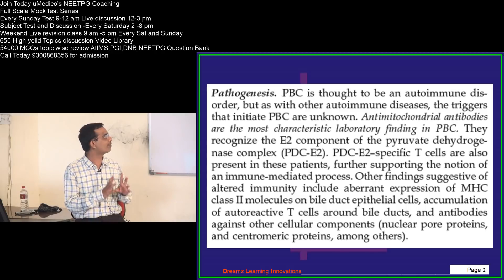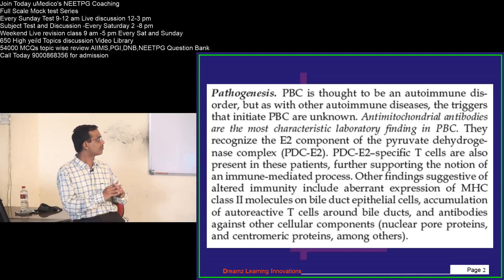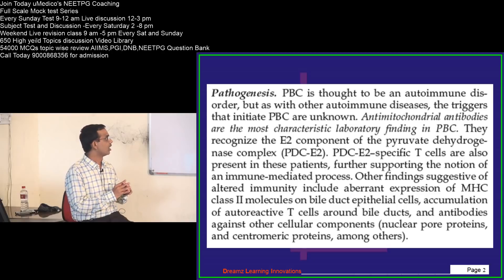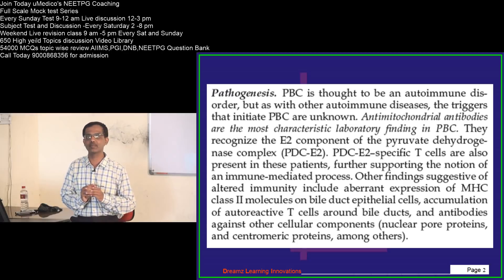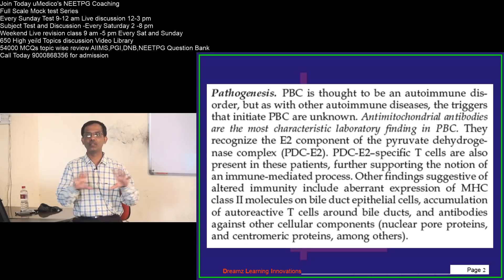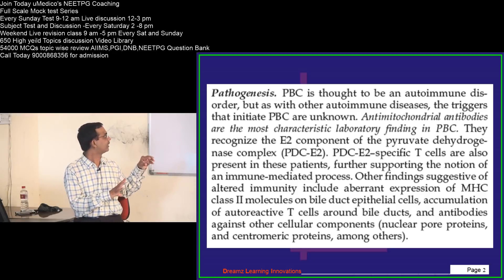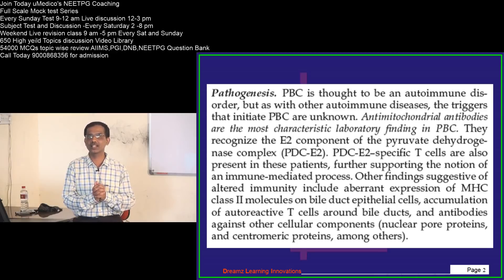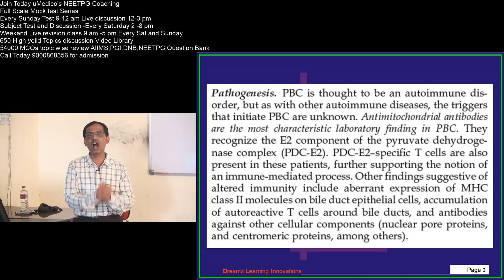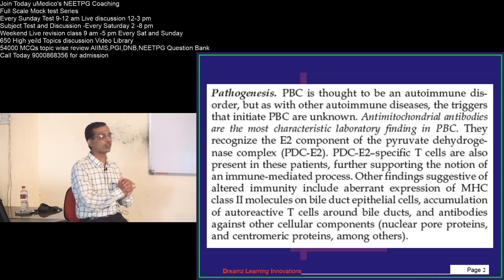Antimitochondrial antibodies are the characteristic laboratory finding in PBC. They recognize the E2 component of the pyruvate dehydrogenase complex. This pyruvate dehydrogenase complex is present on immunological cells, and PDC-specific T cells are also present in these patients. These antibodies are directed against the E2 component, which is a subunit of the pyruvate dehydrogenase complex. This is another MCQ that has been asked several times — antimitochondrial antibodies in PBC are directed against the E2 component of the pyruvate dehydrogenase complex.